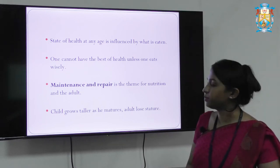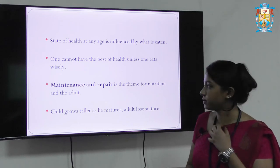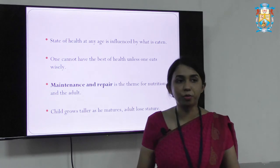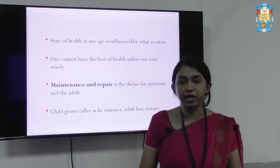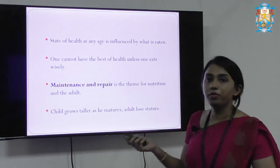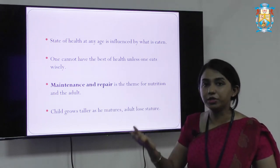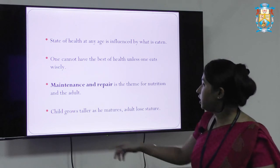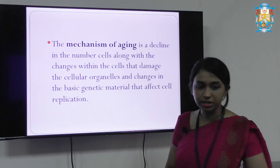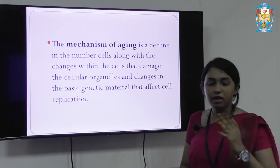The state of health at any age is influenced by what is eaten. One cannot have the best health unless one eats wisely. Maintenance and repair is the theme of nutrition for adults. We are not concentrating on providing nutrients for growth or other special aspects; we are ensuring that ill effects will not occur in the individual. The main concept of adult nutrition is maintaining and repair. Since adult organs have already matured and are properly functioning, we just have to keep them in check. The mechanism of aging is the decline in the number of cells, along with changes within cells that damage cellular organs and alter the basic genetic material, affecting cell replication.